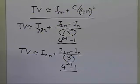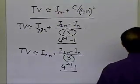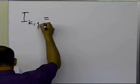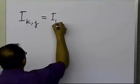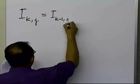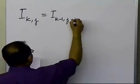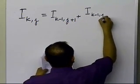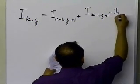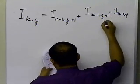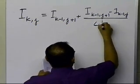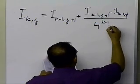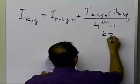The Romberg integration formula is going to look like this: I(k, j) equals I(k-1, j+1) plus [I(k-1, j+1) minus I(k-1, j)] divided by [4 raised to the power k minus 1, minus 1], where k is greater than or equal to 2. You need to follow the indices a little more carefully than other things we've discussed.